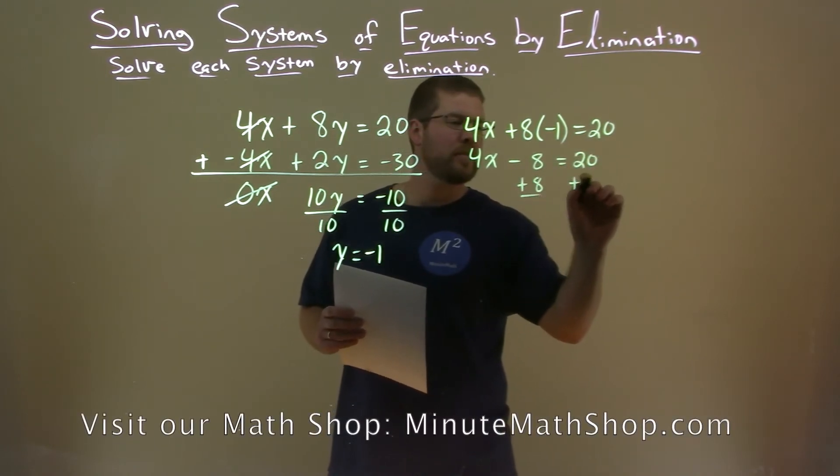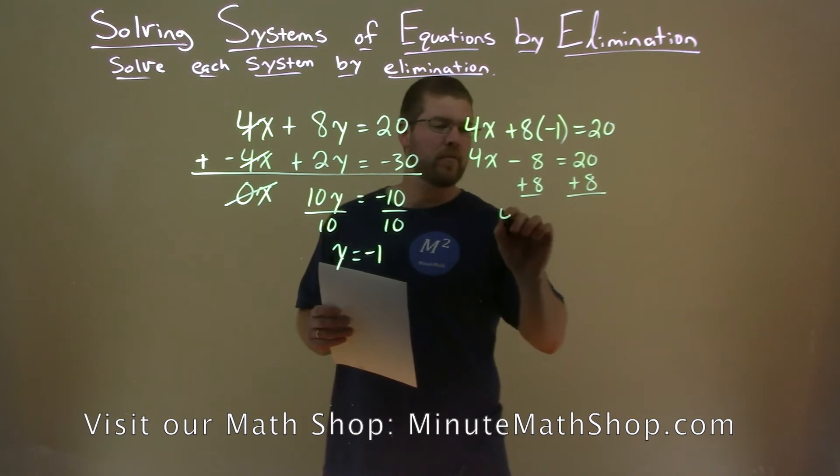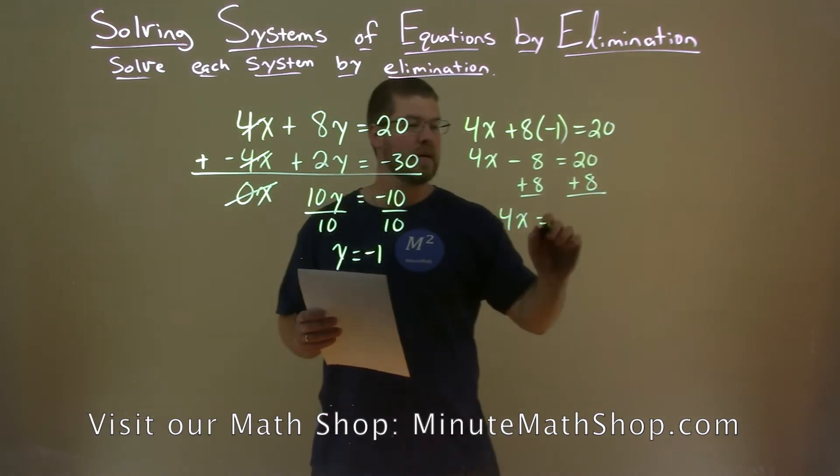Add 8 to both sides. And we're left with 4x equals 20 plus 8, which is 28.